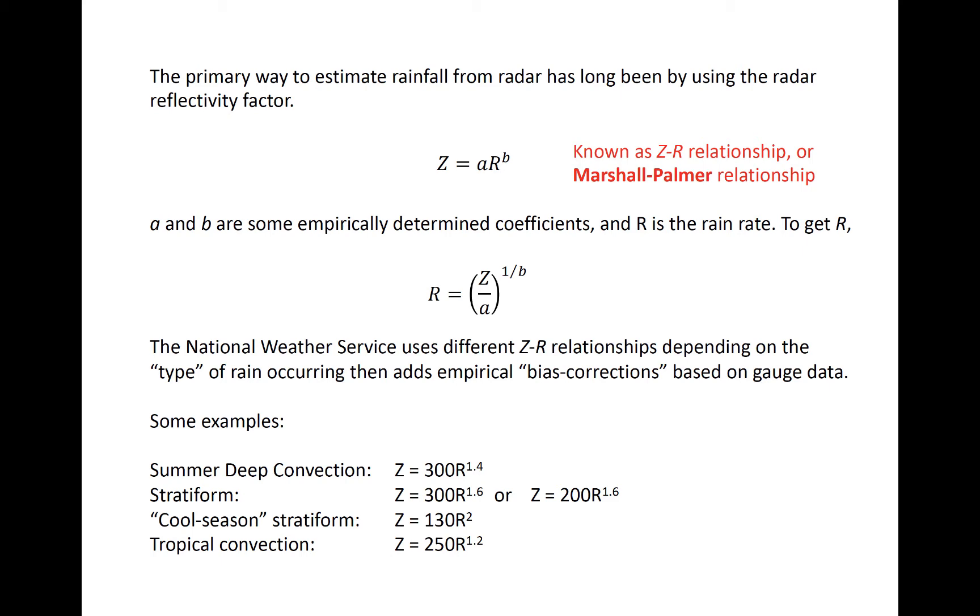The relatively recent dual-polarimetric capabilities of WSR88D radars allow for usage of ZDR and KDP, in addition to Z, to estimate rainfall. We'll see examples of such relationships like this as well soon.